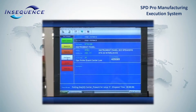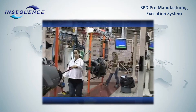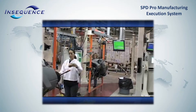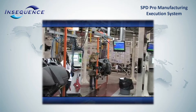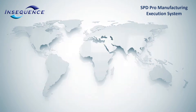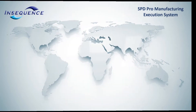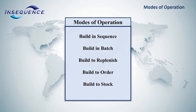In-sequence customers use the MES system for a wide variety of discrete manufacturing operations. The system comes complete out of the box and can be tailored to virtually any operation. There are several different modes of operation that MES can perform in. Let's review some of them now.